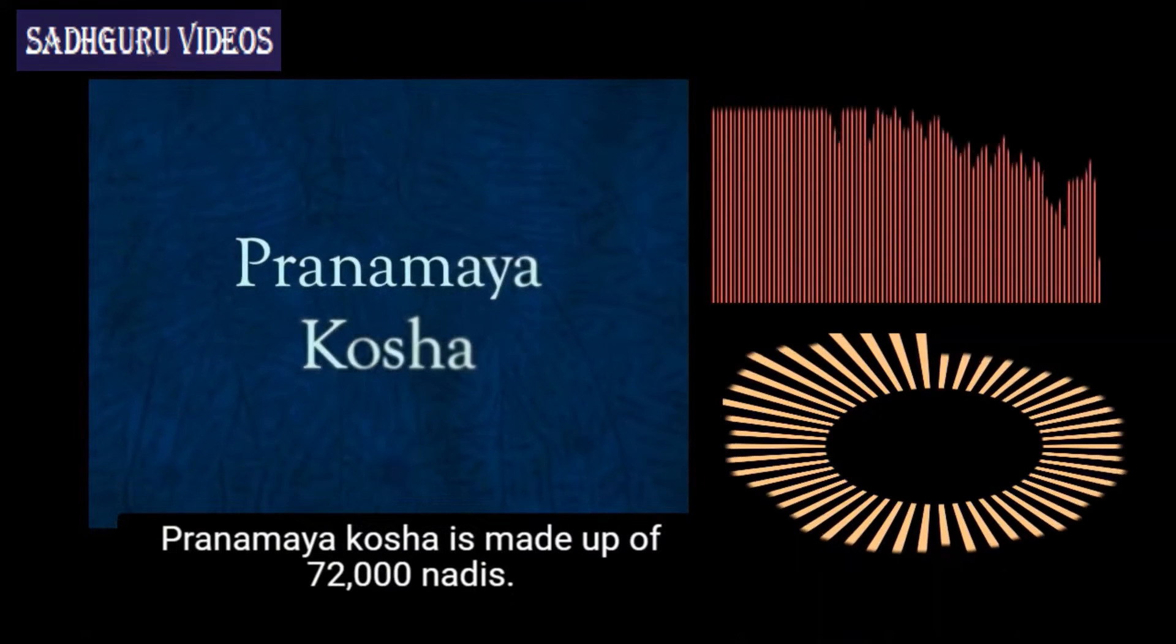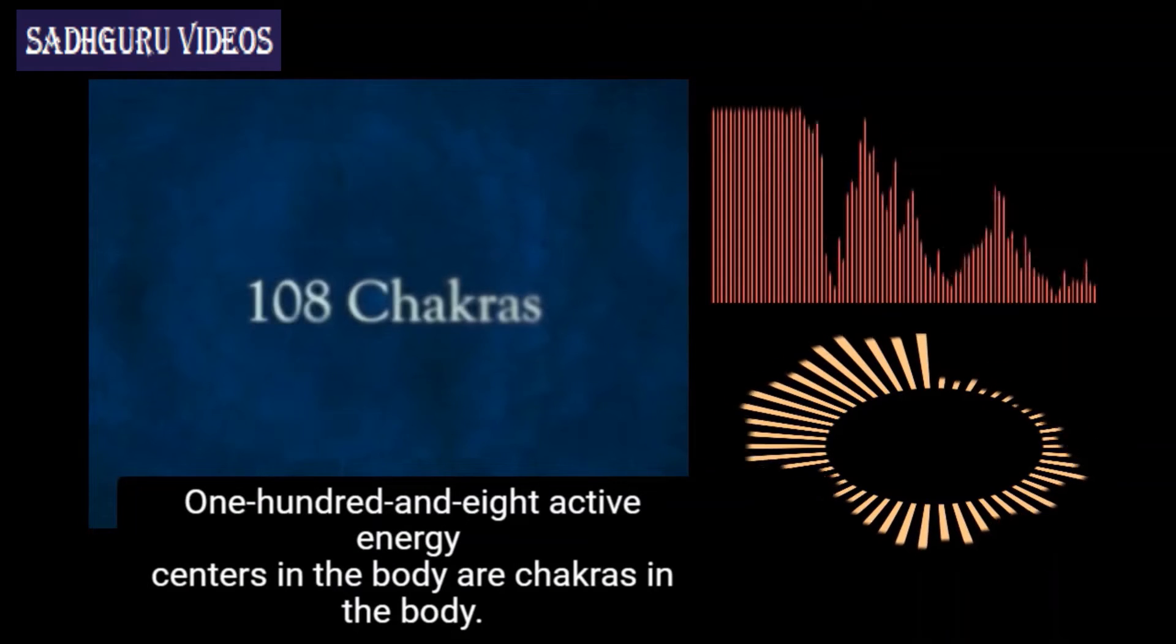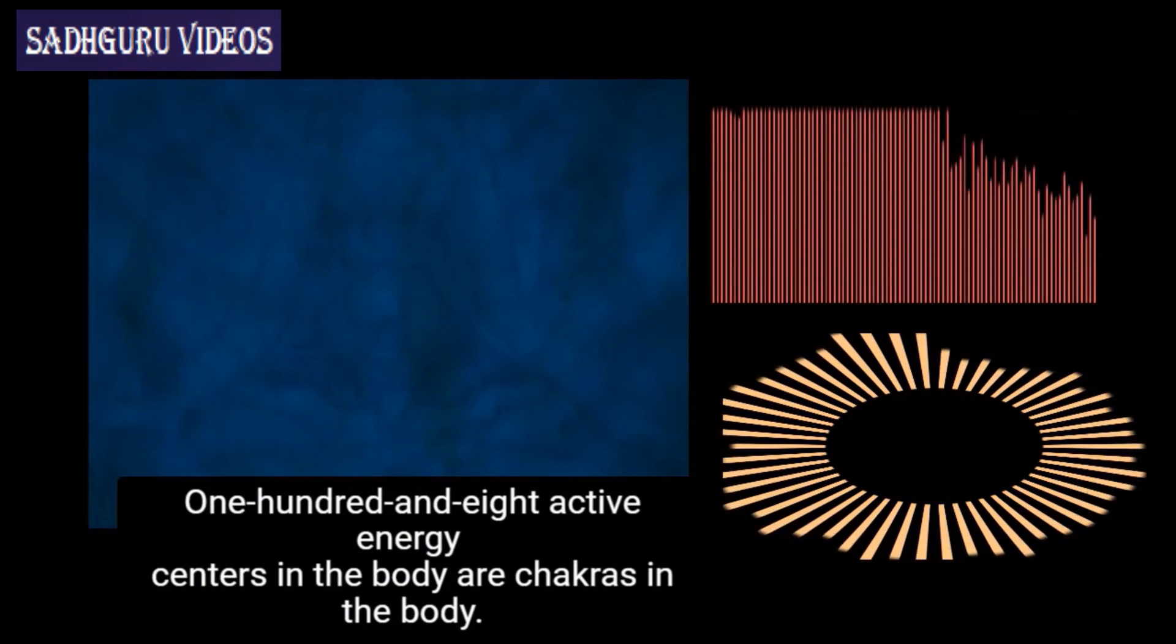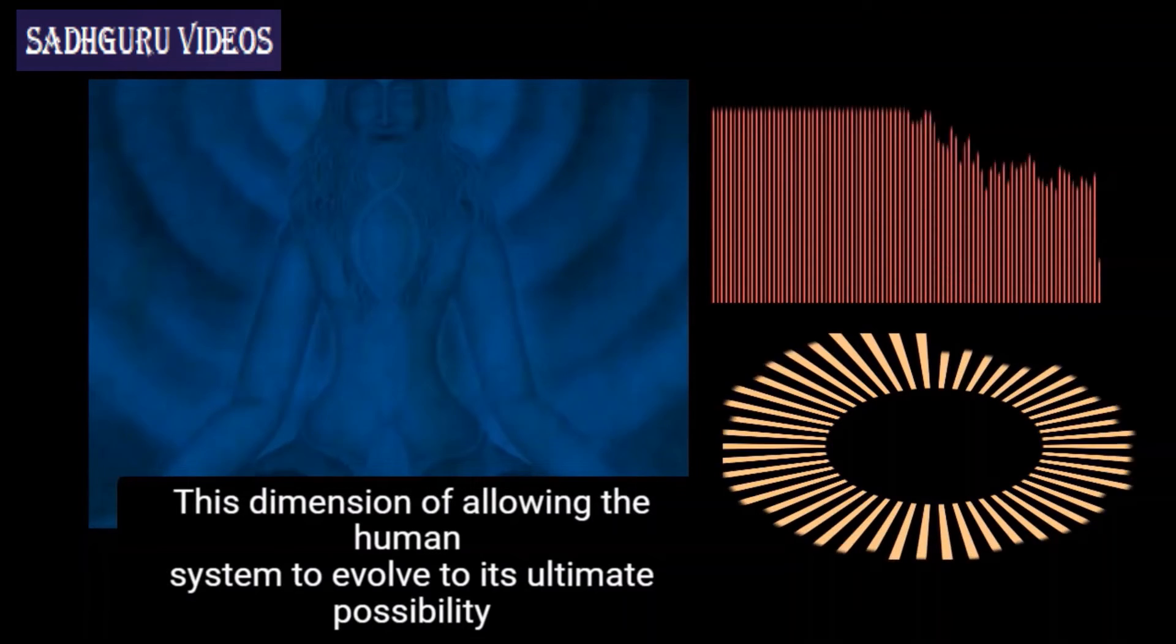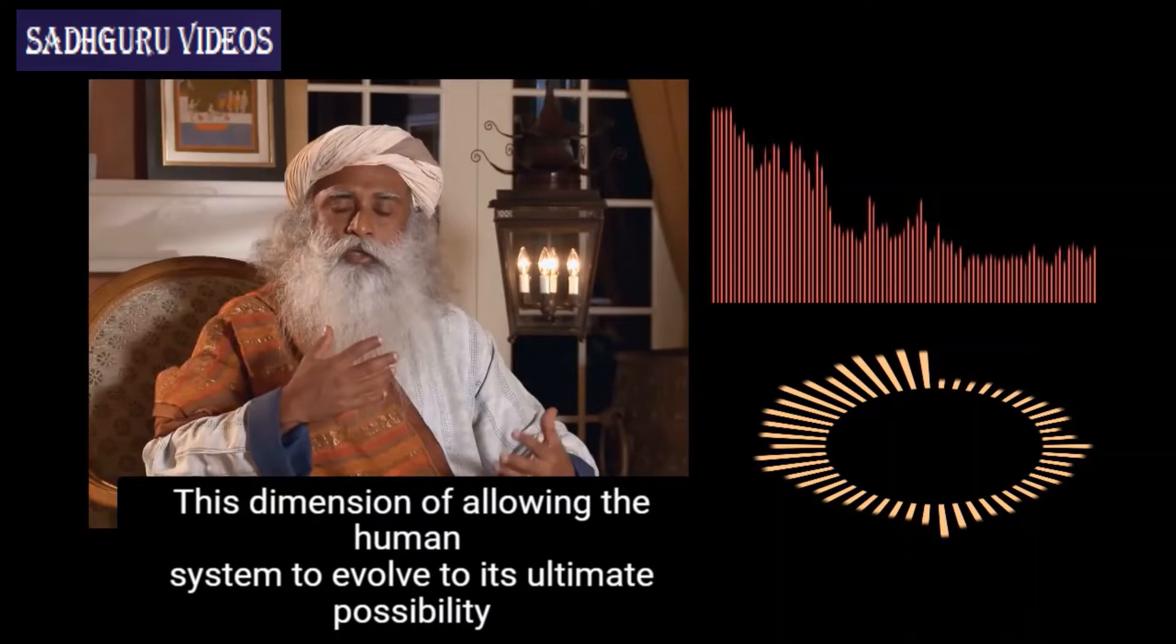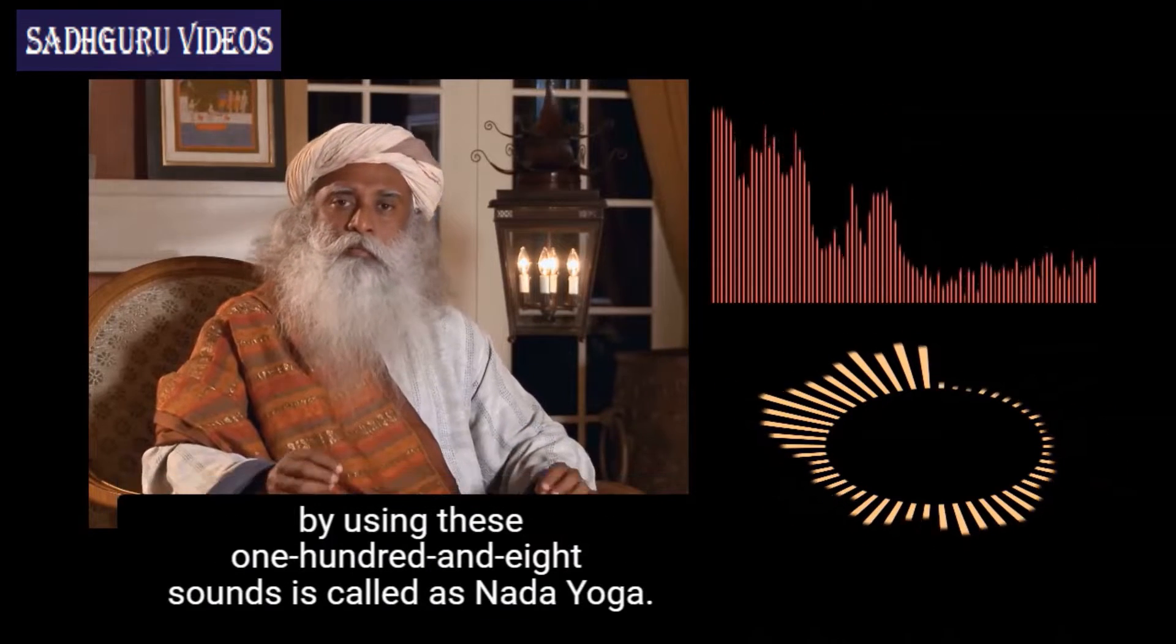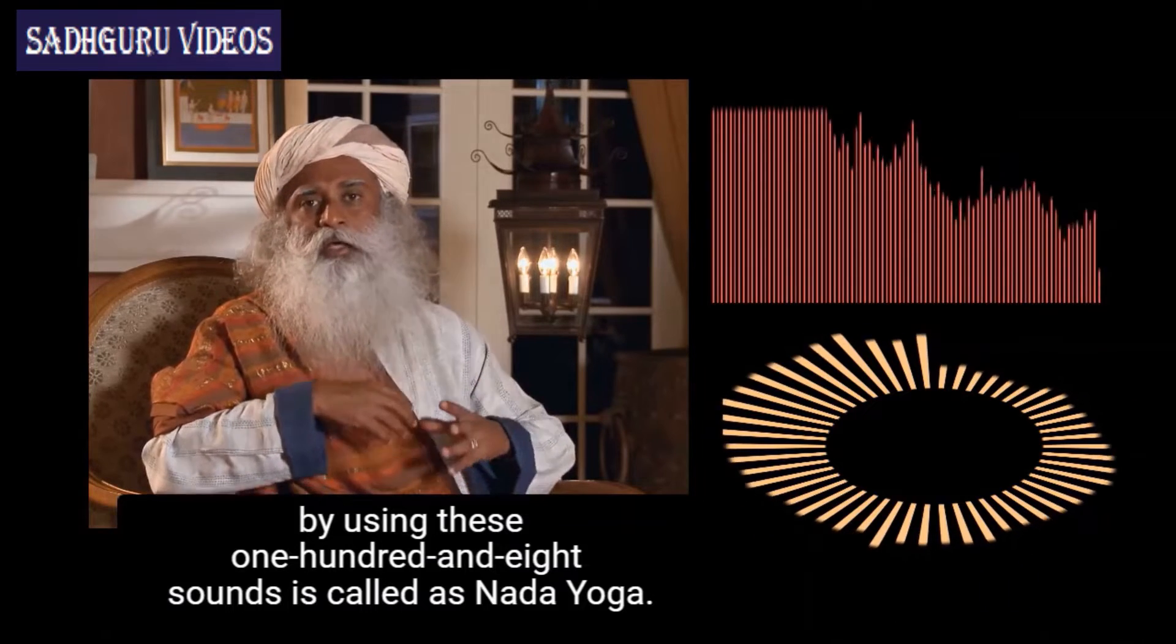Pranamaya Kosha is made up of 72,000 nadis and 108 active energy centers or chakras in the body. This dimension of allowing the human system to evolve to its ultimate possibility by using these 108 sounds is called Natha Yoga.